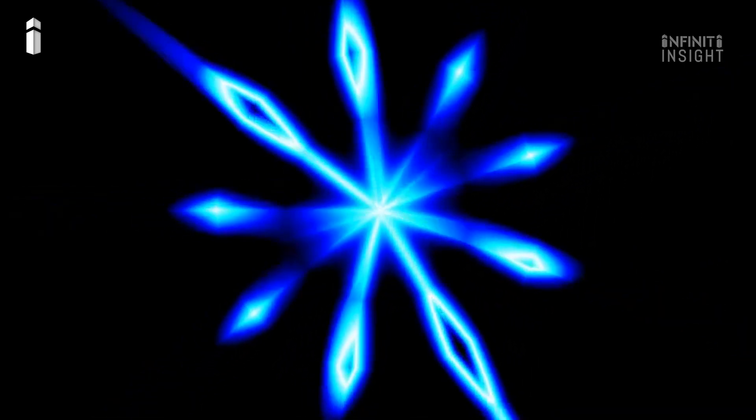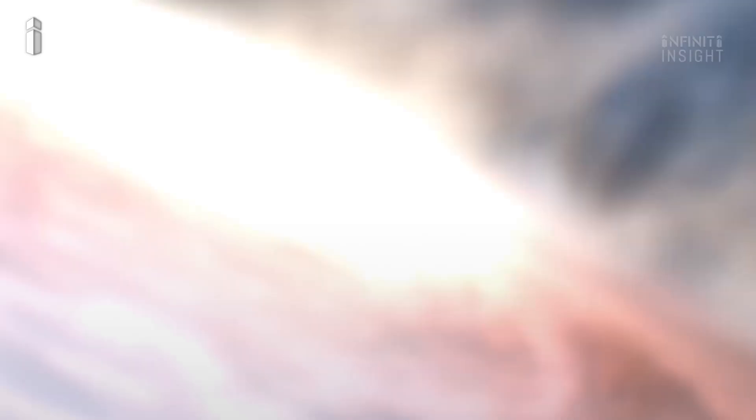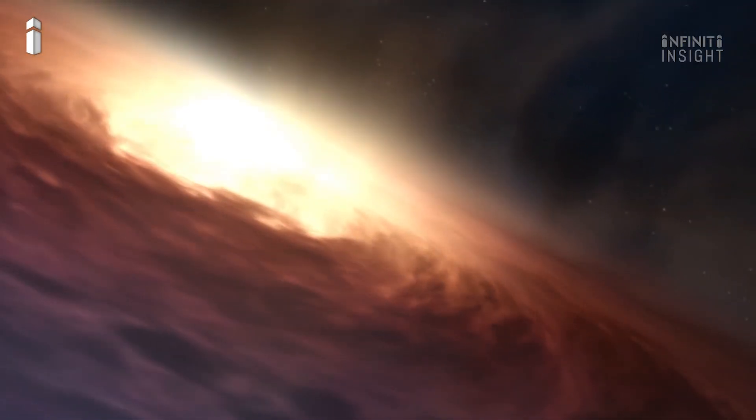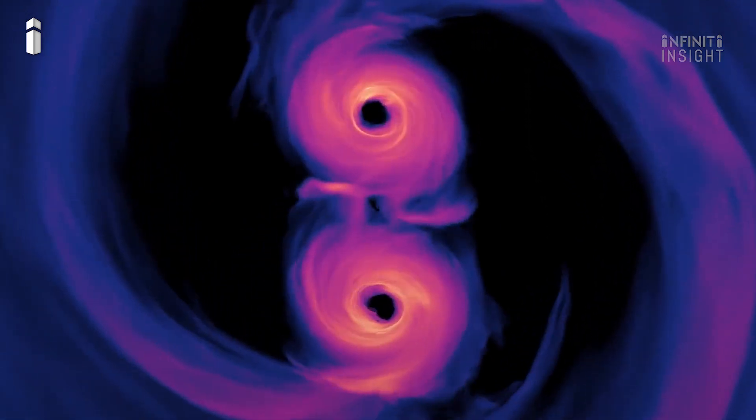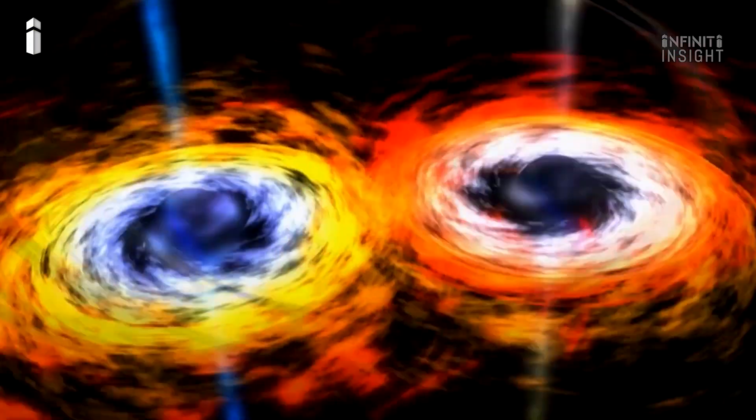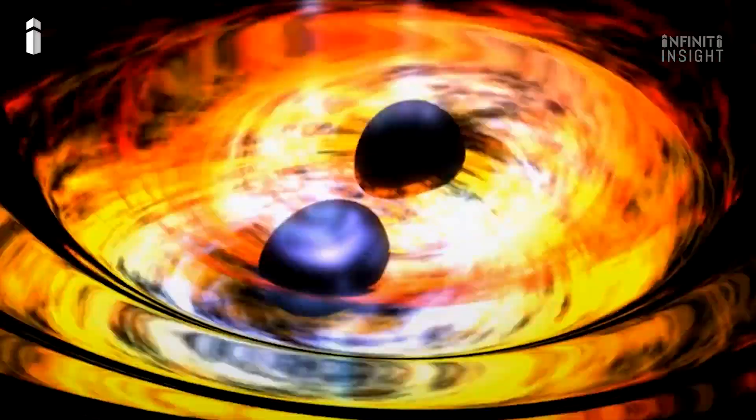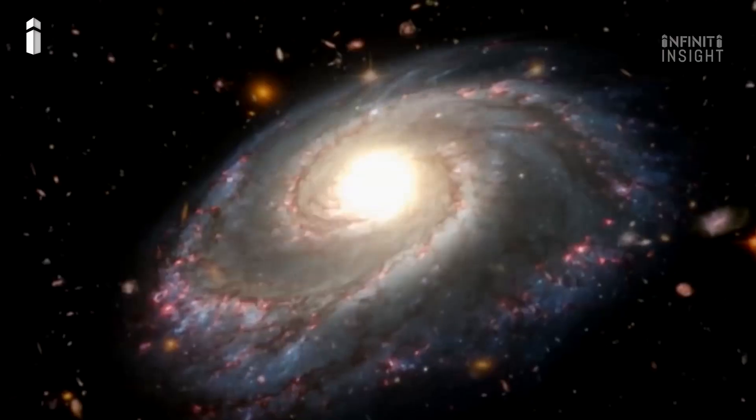If wormholes do exist, one reason we might not have spotted them is that they could be hiding behind black holes. A black hole is what happens when there's so much mass squeezed into an object that it ends up with such a strong force of gravity that even light can't escape its pull. Once you get too close to a black hole, you're toast. There's no escaping being smashed into oblivion.